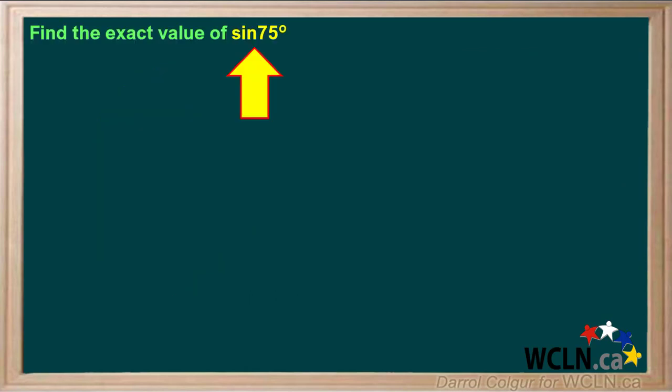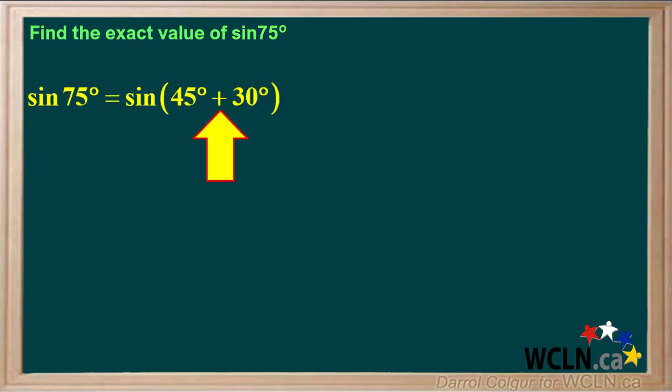Let's do an example of how we can use sum and difference identities to find exact values of angles. Here we are asked to find the exact value of the sine of 75 degrees. The sine of 75 degrees is not one of the exact values we know already. We do know the exact values for sine 45 degrees and sine 30 degrees, and we know that 75 equals 45 plus 30. So we'll find the sine of 45 degrees plus 30 degrees.